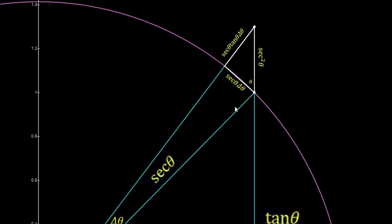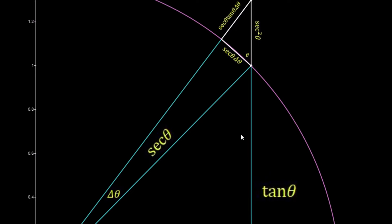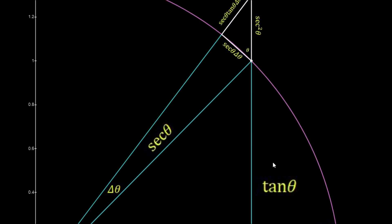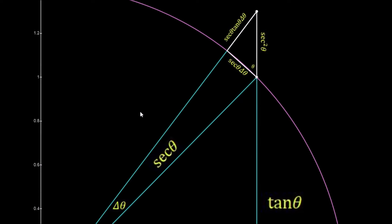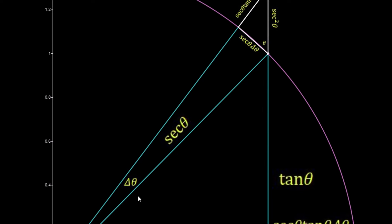Now when that happened, we got this similar triangle, and we've seen that the differentiation of tan theta is going to be given by this little addition here, which is sec squared theta. Now we can use the same argument to differentiate sec theta.